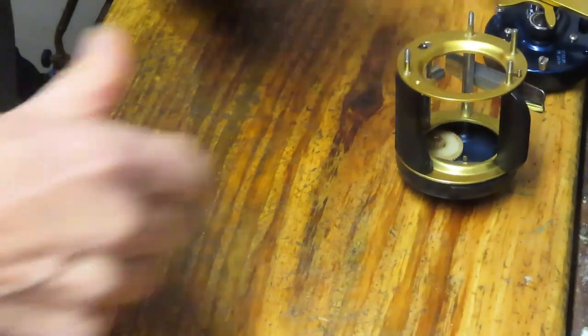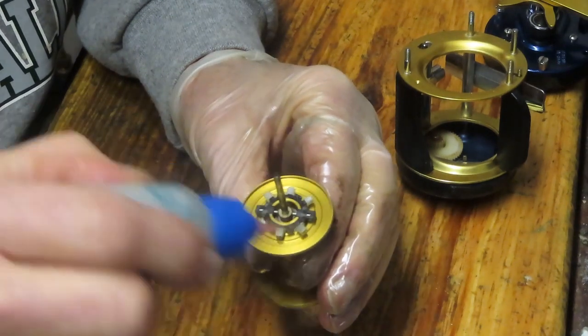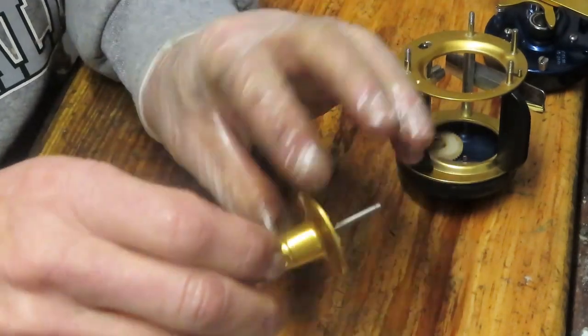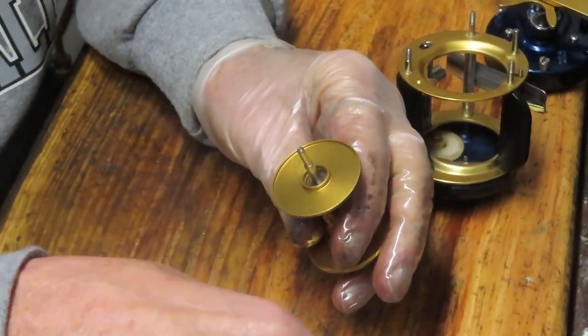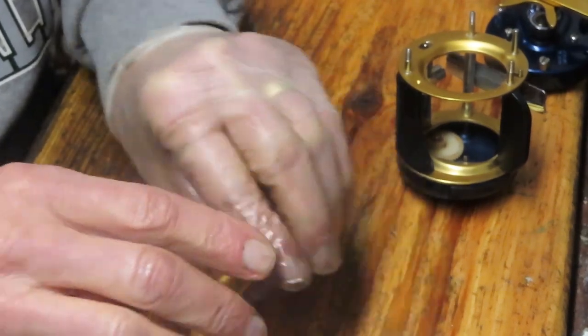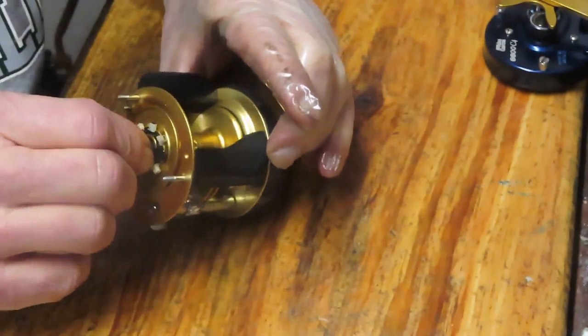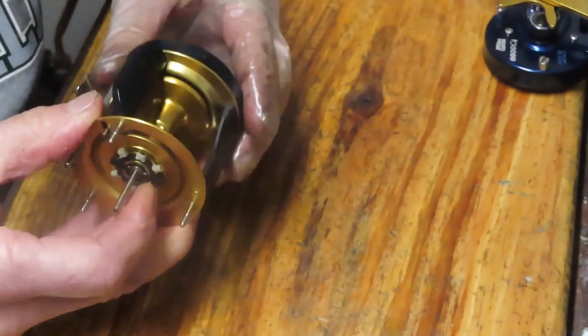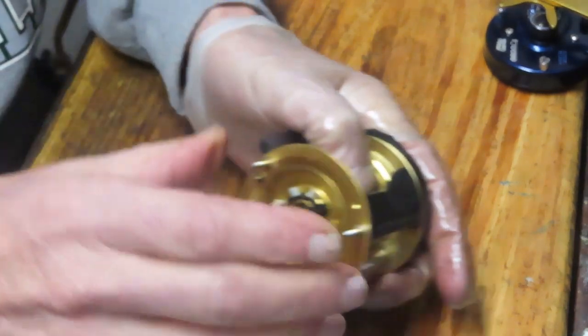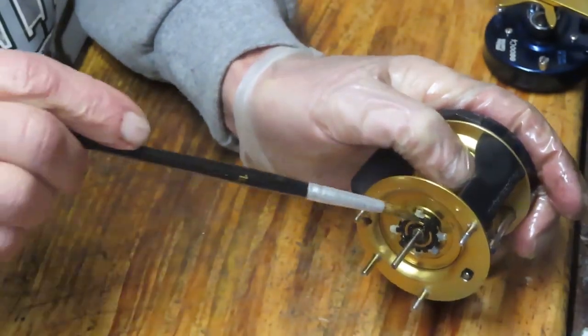Last thing then is just to go to your spool. You have a spool bearing under here. Go ahead and oil that. You don't need to oil the plastic again. That's your setup for this. Let's go ahead and put that in.